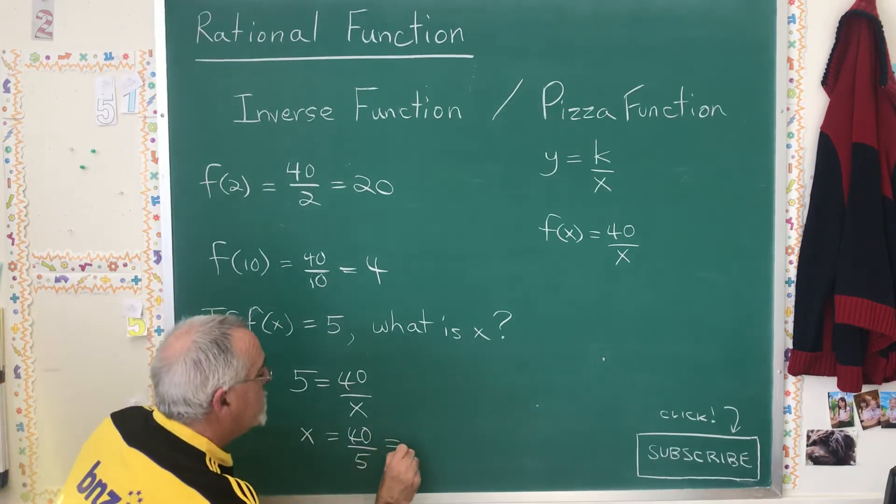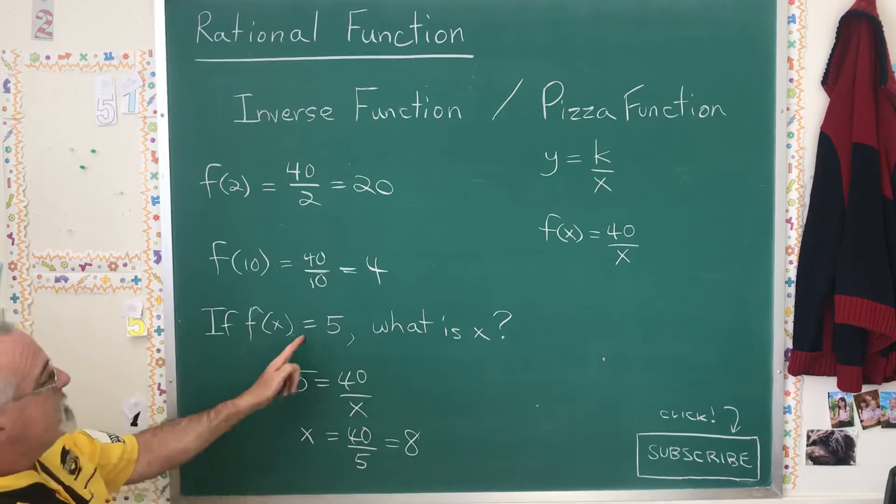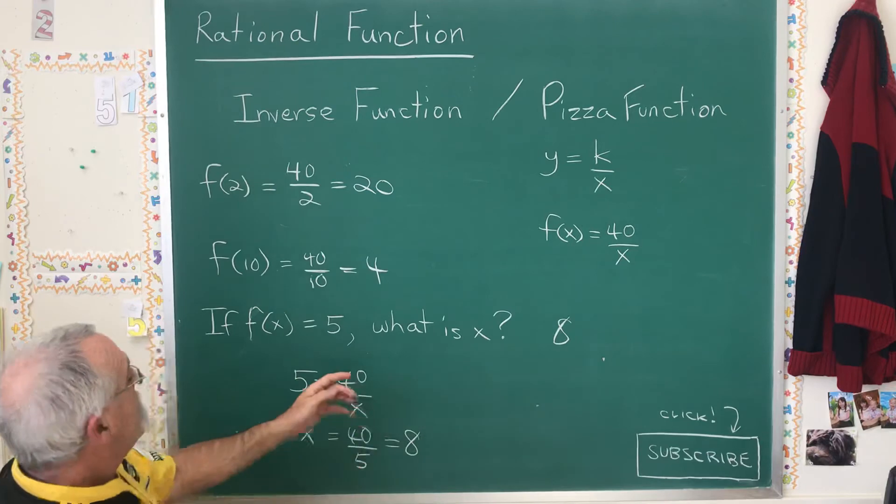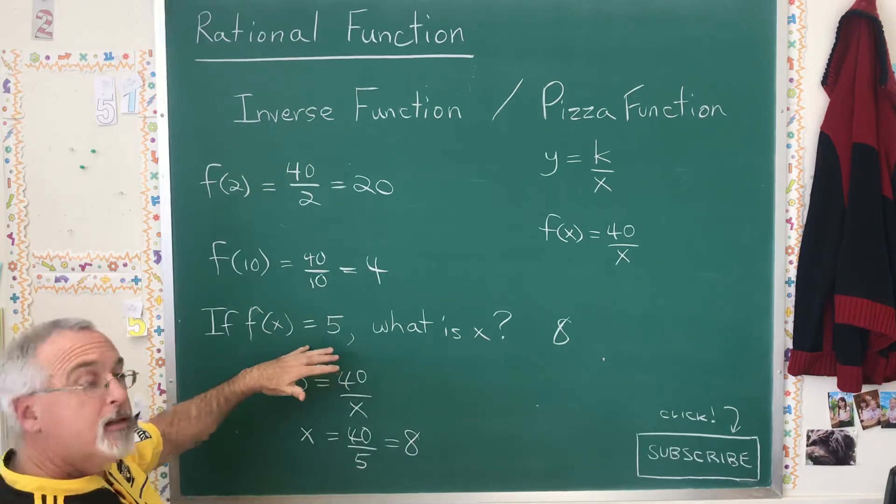40 divided by 5 is equal to 8. So the answer to this question is that x was equal to 8 when f of x was 5.